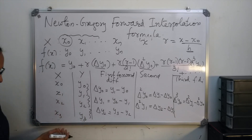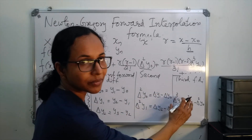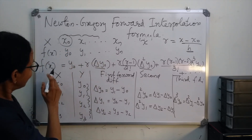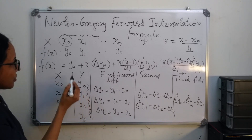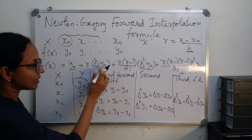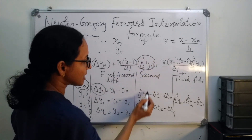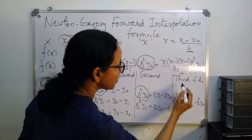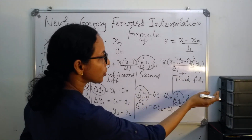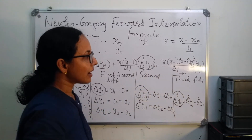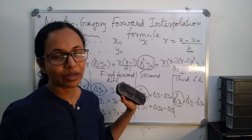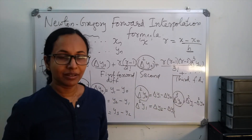If you have more data points such as x4, x5, and so on, you will have more columns. In the formula for evaluating y at a desired x, you substitute y0 (first value in the y column), Δy0 (first value in the first difference column), Δ²y0 (first value in the second difference column), Δ³y0 (first value in the third difference column), and so on. The next term would be r(r−1)(r−2)/3! · Δ³y0 + r(r−1)(r−2)(r−3)/4! · Δ⁴y0, and so forth.